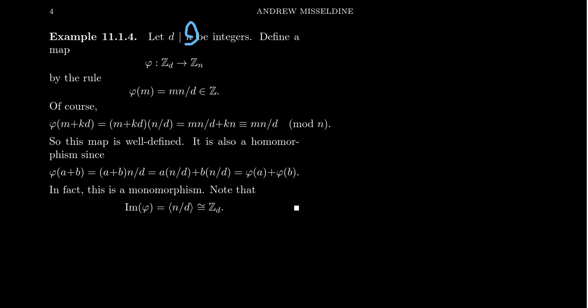So imagine you have an integer n for which it has a divisor d that you see right here. So with the divisor d in hand, we can define a homomorphism from Zd to Zn. So Zd is the cyclic group of order d, Zn is the cyclic group of order n. And we'll think of this as additive notation. So we're working mod d and mod n, respectively. So since d is a divisor of n, we're going to define a function from Zd to Zn by the rule that the integer m will map to the integer mn divided by d.